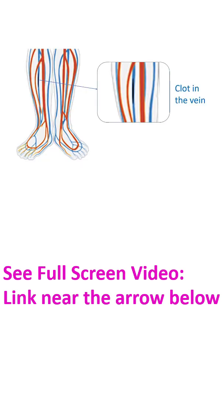Clots in the veins can occur when one is bedridden after a major illness, surgery or fracture. This can be prevented to some extent by active or passive movements of the legs while taking rest. Medications can also help to prevent clot formation in the veins.